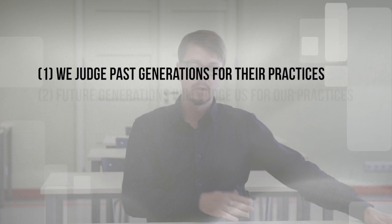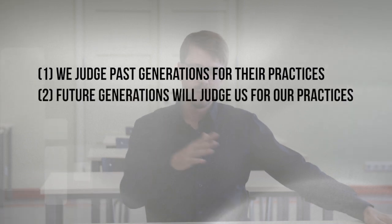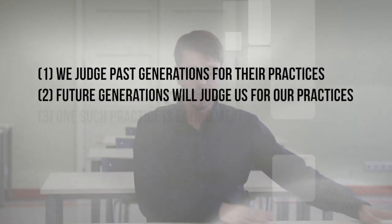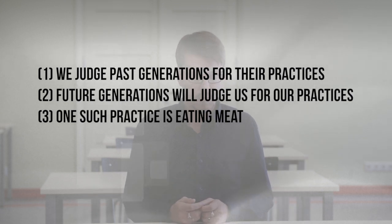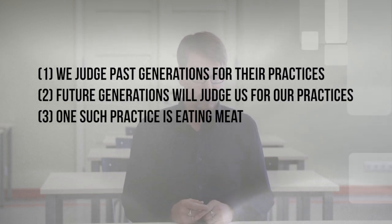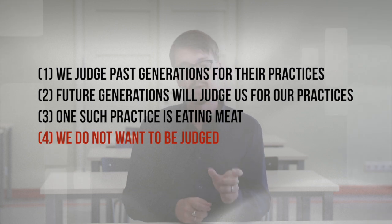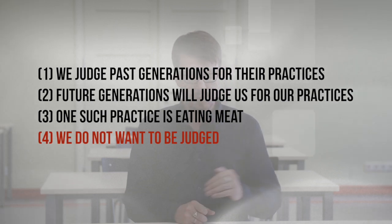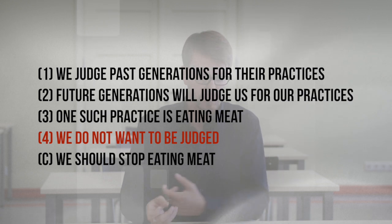If you look at this reconstructed argument, you'll see there's one step missing — that's the implicit premise that we don't want to be judged. We judge people in the past; people in the future will judge us; one thing they'll judge us for is eating meat; we don't want to be judged — that's the implicit unstated premise — and therefore we have reason to stop eating meat.